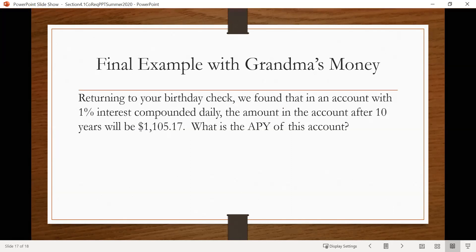So talking about the birthday check example again, we found that in an account with 1% interest compounded daily, the amount in the account after 10 years will be $1,105.17. And we're asked to find the APY of that. So we'll do that simply by using that formula we were just looking at.